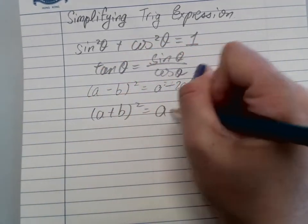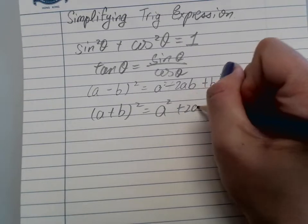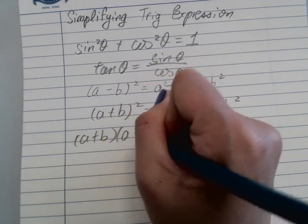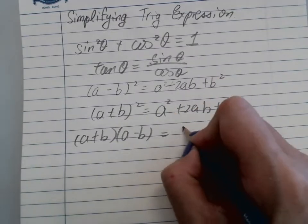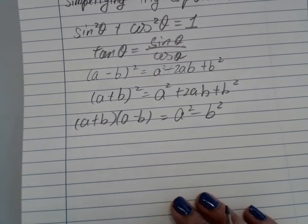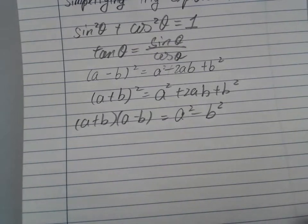We also have (a + b)² = a² + 2ab + b², and (a + b)(a - b) = a² - b². These are the identities you need for the expansion.